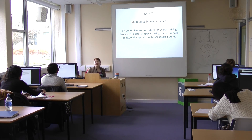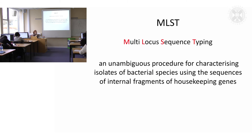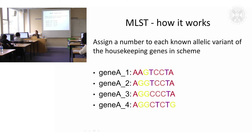Then you have something called multi-locus sequence typing. Rather than looking at the whole genome, you select a few housekeeping genes. Housekeeping genes are genes that a particular organism — say Staphylococcus aureus — all members of that species have, and they're essential for that species. They won't get any mutations that delete the gene or anything like that, because they're absolutely essential, so they tend to have a slower mutation rate. What you do is take a few of these housekeeping genes — normally six to eight — and look at some internal fragments of those genes.